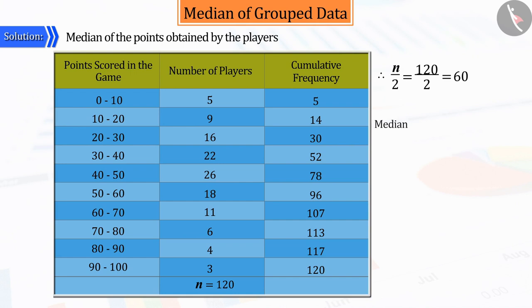To obtain the median, we use the following formula. L plus n by 2 minus Cf by F multiplied by H.